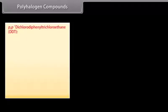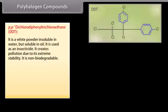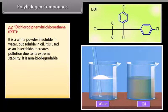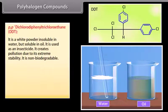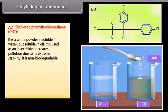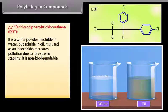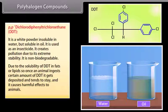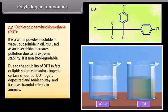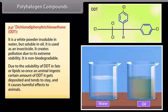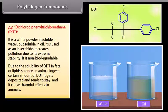P,P-dichlorodiphenyltrichloroethane, DDT. It is a white powder, insoluble in water but soluble in oil. It is used as an insecticide. It creates pollution due to its extreme stability. It is non-biodegradable. Due to the solubility of DDT in fats or lipids, once an animal ingests a certain amount of DDT, it gets deposited and tends to stay, and it causes harmful effects to animals.